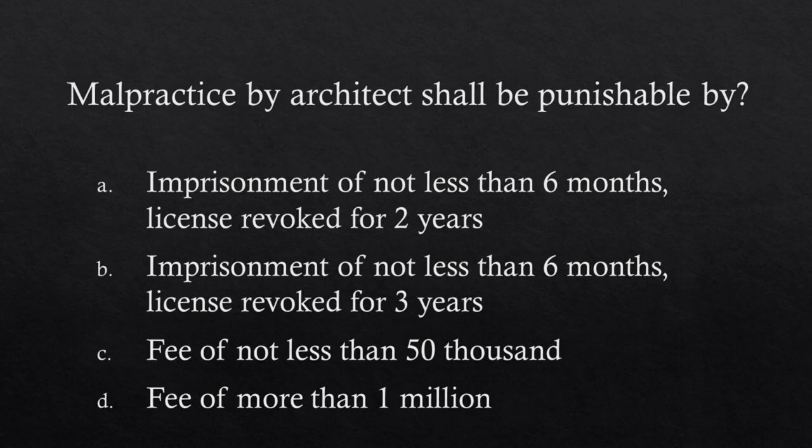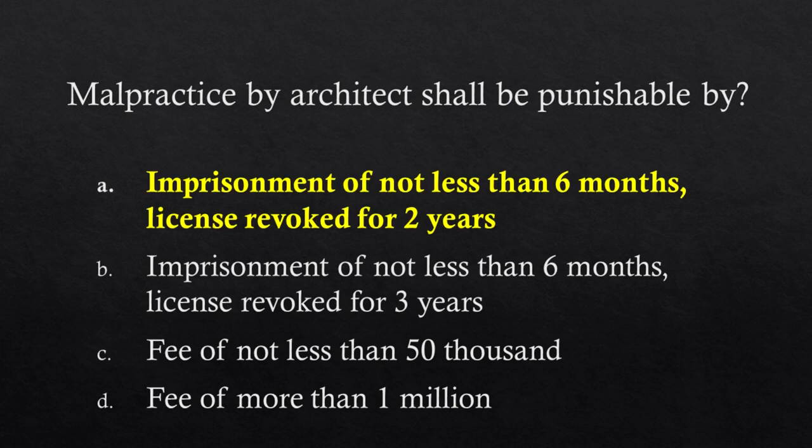Malpractice by an architect shall be punishable by: Imprisonment of not less than 6 months and license revoked for 2 years; or imprisonment of not less than 6 months and license revoked for 3 years; or fine of not less than 50,000; or fine of more than 1,000,000. Answer: Imprisonment of not less than 6 months and license revoked for 2 years.